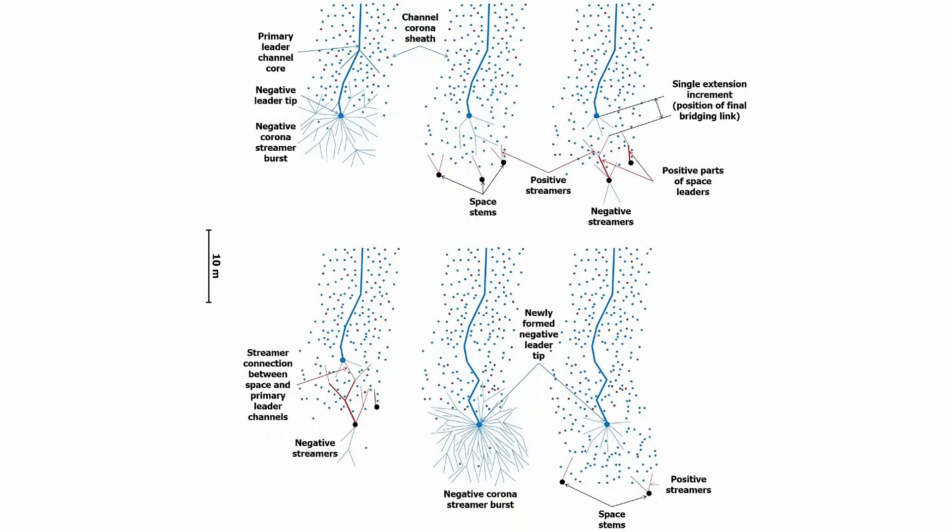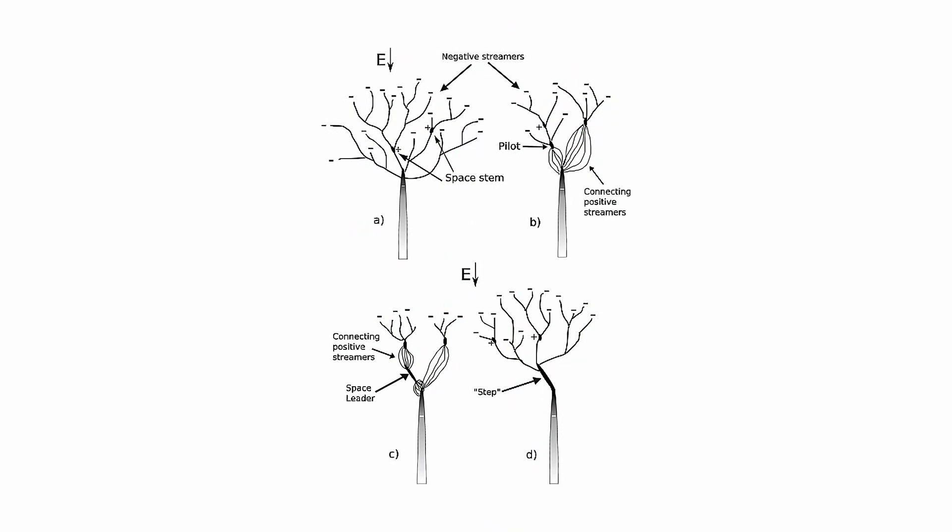The subsequent stage involves the joining of the positive part of the channel of a bipolar spatial leader with the channel of the negative leader.